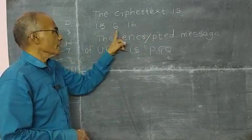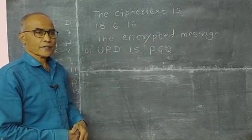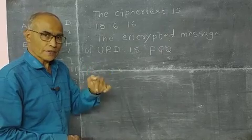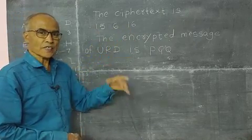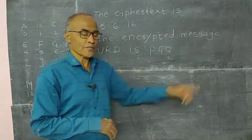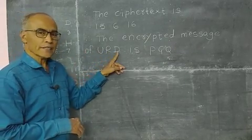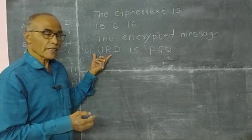Third and last value is 3, so f of 3. That means x is 3. 3 into 3 plus 7, this is the function. Put 3 instead of x. 3 times 3 is 9, 9 plus 7 is 16 mod 26. Now here there is no need to divide because this 16 is less than 26. Therefore f of 3 is equal to 16. In this way, f of 20 is 15, f of 17 is 6, f of 3 is 16. Therefore the cipher text is 15, 6, 16.